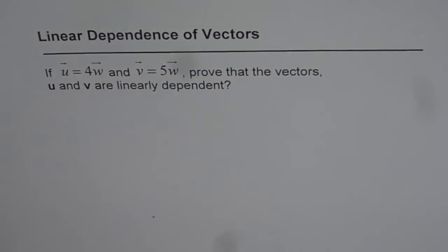Linear dependence of vectors. If u equals 4 times w and v equals 5 times w, prove that the vectors u and v are linearly dependent.